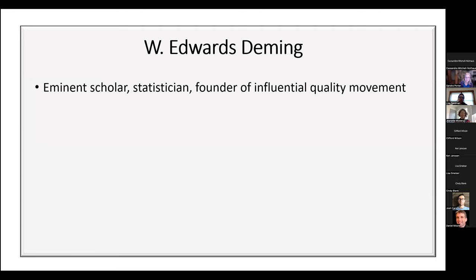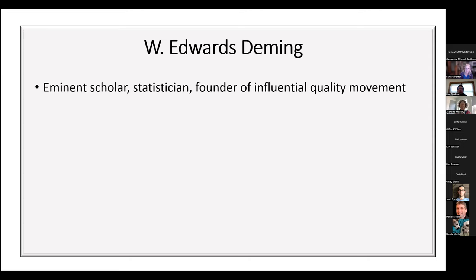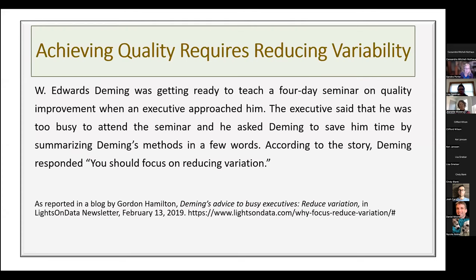I thought about that folktale when I read this story about Deming. Deming was a scholar and statistician, a founder of an influential quality movement in the US and internationally. He was about to teach a four-day seminar on quality improvement when an executive asked him to summarize his methods in a few words. Deming responded: 'You should focus on reducing variation.'